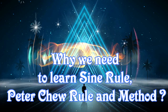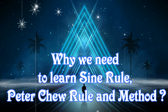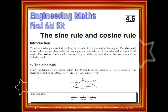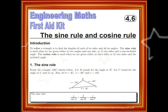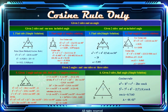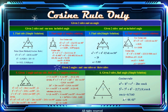Why do we need to learn the sine rule, Peter Chu rule, and method? Generally, there are two important rules in the solution of triangles, namely the sine rule and the cosine rule. This leads most people to think that we need to learn both rules to solve all triangle problems, which is not true. In fact, all triangle problems can be solved using the cosine rule. But if so, why do we need to learn the sine rule? This video will tell you the reasons.